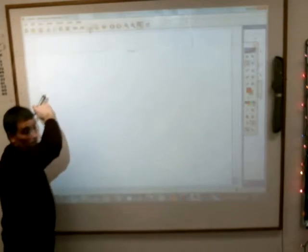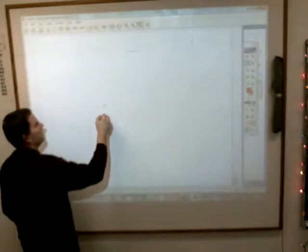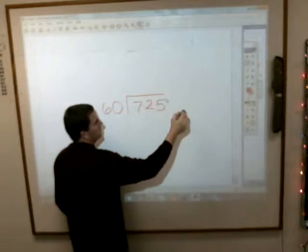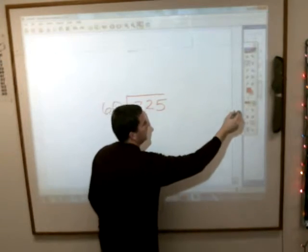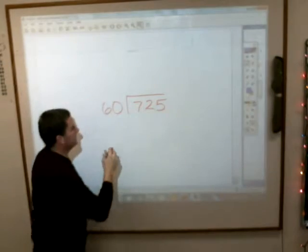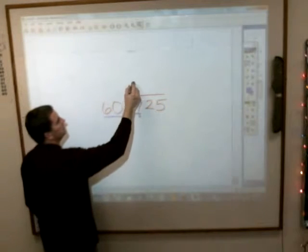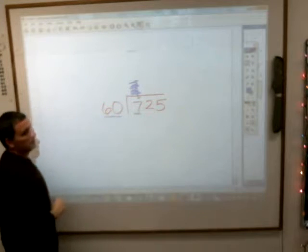Now let's look at another one there. What about 60 into 725? If you're doing 60 into 725, does 60 go into 7? It does not. So please don't put a number above the 7. Nothing gets put there.